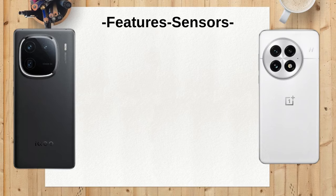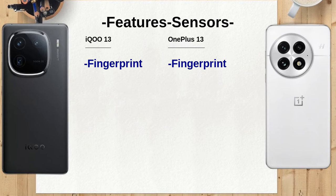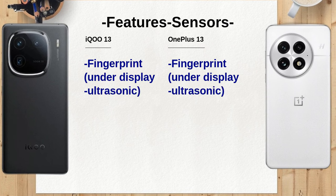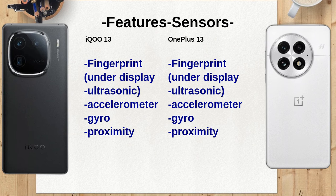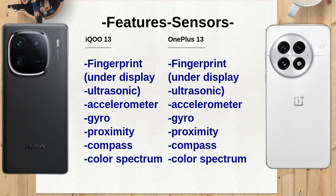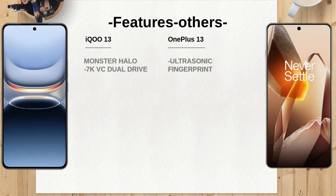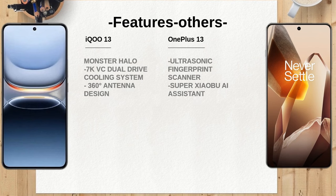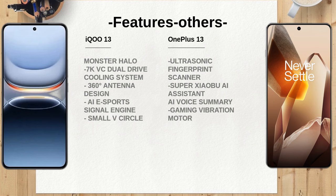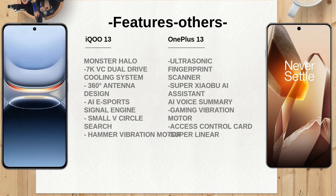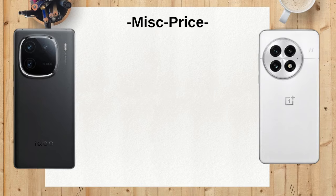Both devices utilize the Adreno 830 GPU, ensuring high-quality graphics performance, meaning that gaming and media consumption will be equally impressive on both models. The video recording capabilities are robust on both devices, with the iQO13 supporting 8K at 30FPS and various 4K options, while the OnePlus 13 also offers 8K at 30FPS but adds Dolby Vision for enhanced video quality. Both the iQO13 and OnePlus 13 include an ultrasonic under-display fingerprint sensor, along with other essential sensors like accelerometer and gyro.